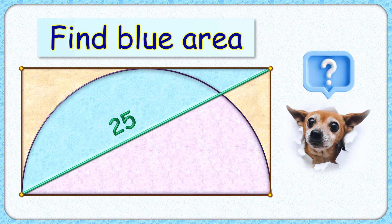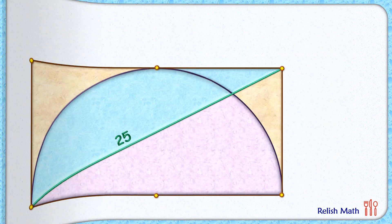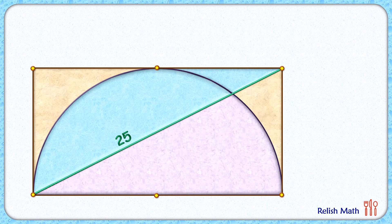Welcome everyone to this interesting question where given is a semicircle inside a rectangle. The length of diagonal is given as 25 cm. The exciting part is, with this limited data, we have to find the total area of this blue shaded region. Let's check this simple and elegant solution.